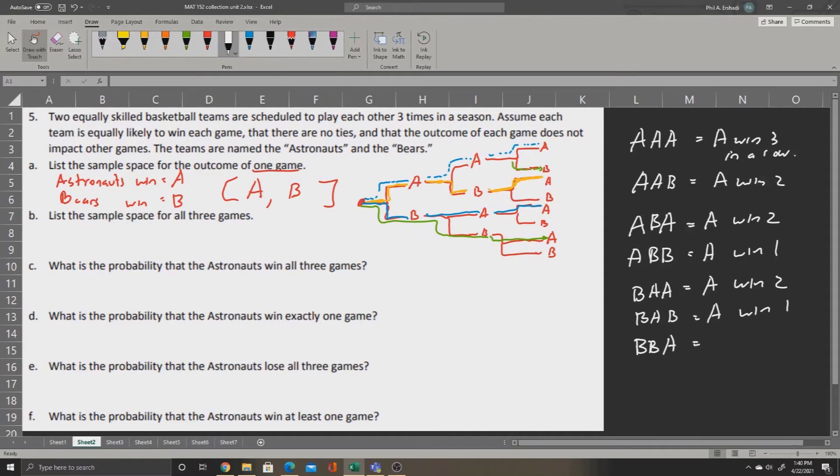Again, giving us one win for the Astronauts. And of course, we could go B, B, B. Meaning that the Astronauts don't win any. So this entire list is your sample space.